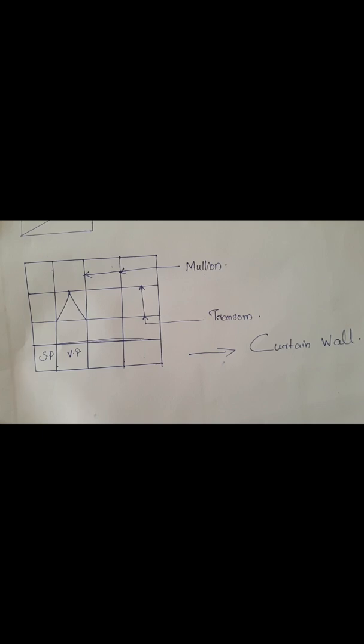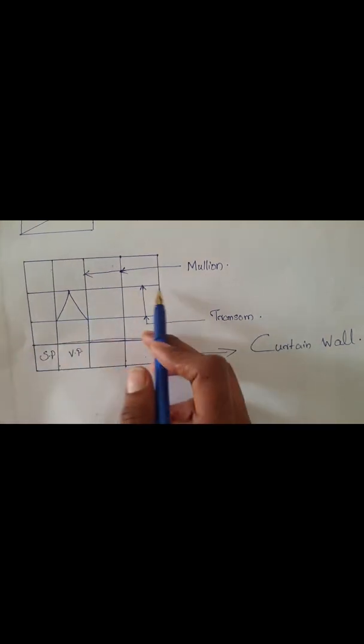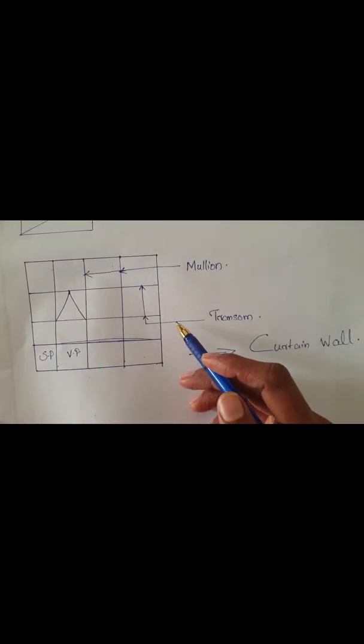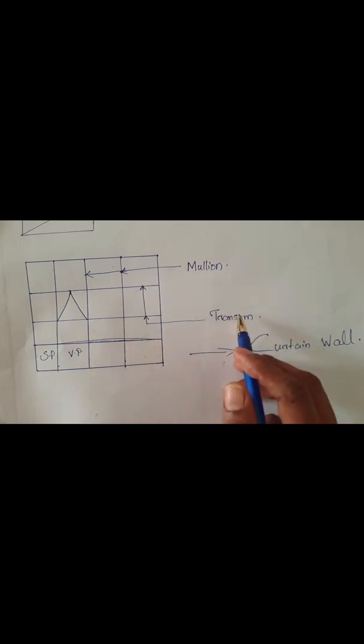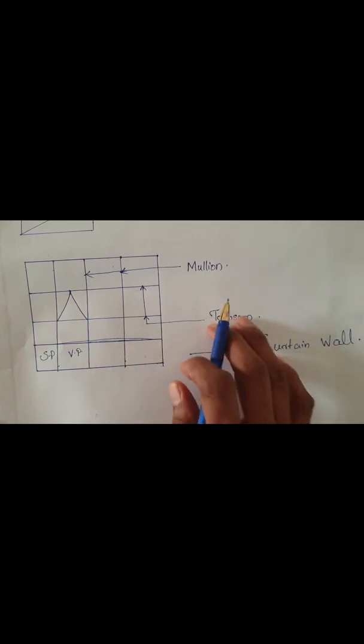Curtain walls are normally provided in buildings and some multi-storey villas also. Curtain walls come with horizontal members and vertical members. The vertical members are called mullions and the horizontal members are called transoms. In curtain walls, if we are providing continuous curtain walls, in some areas slabs are coming.